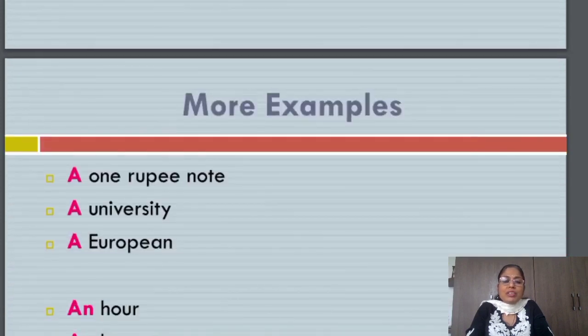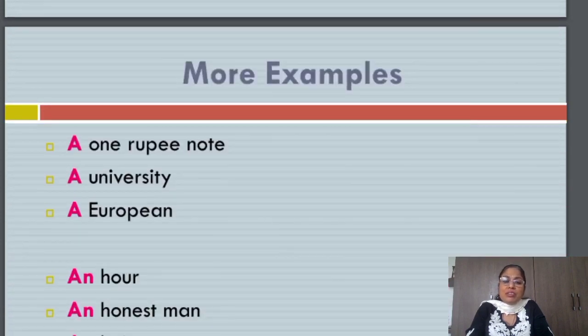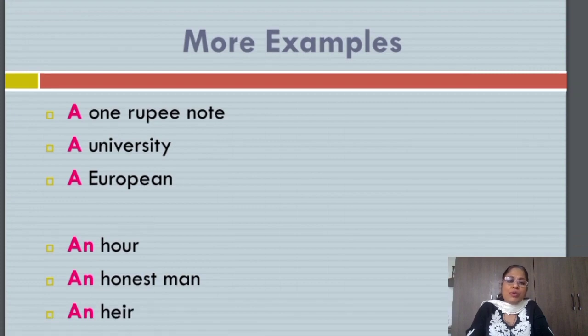I want to bring some more examples for you. The word one starts with the sound 'wun'. So it is a one rupee note. University: 'you', like young man. So a university. European also. The sound of European made by EU is 'year'. So it is a European.